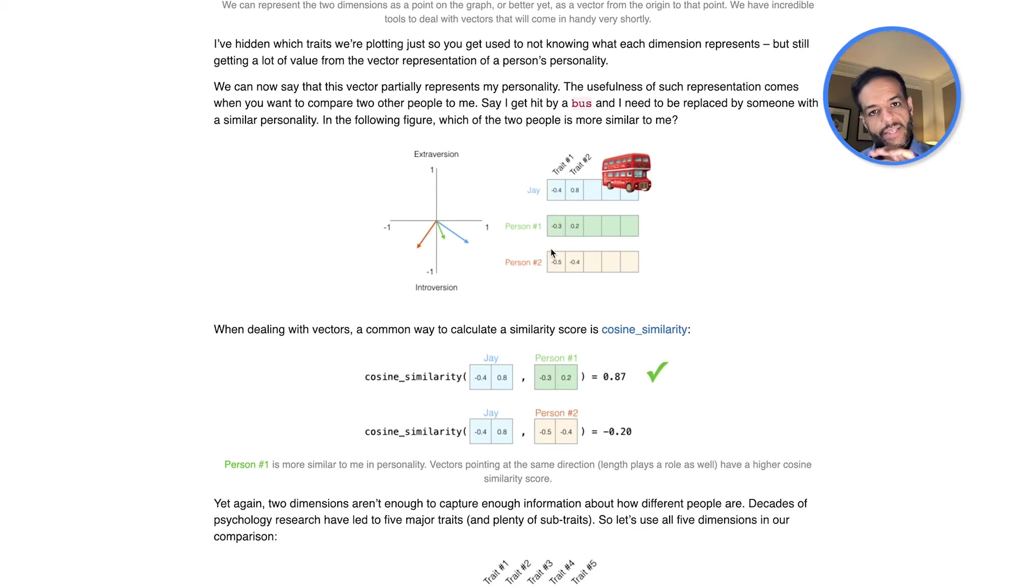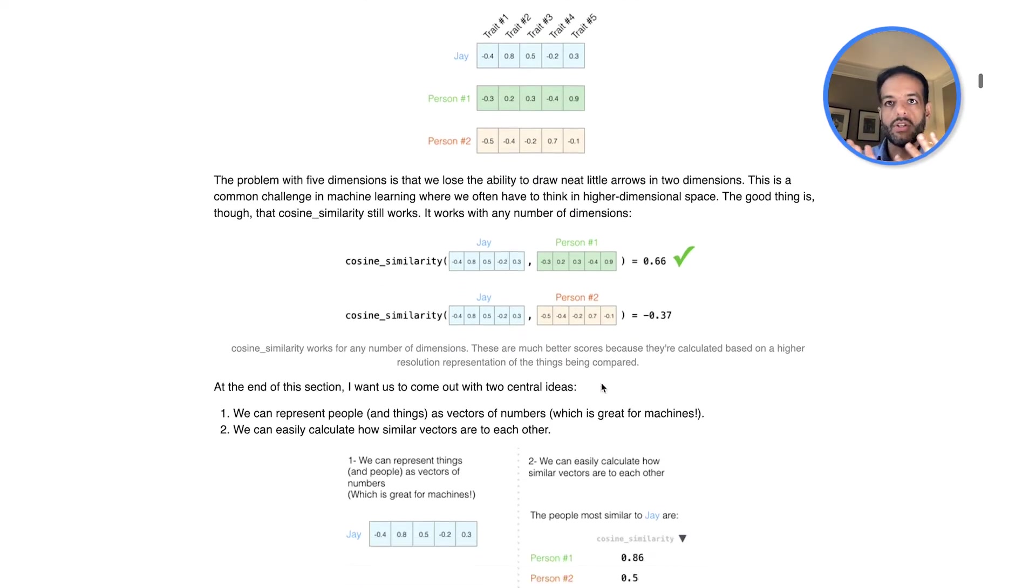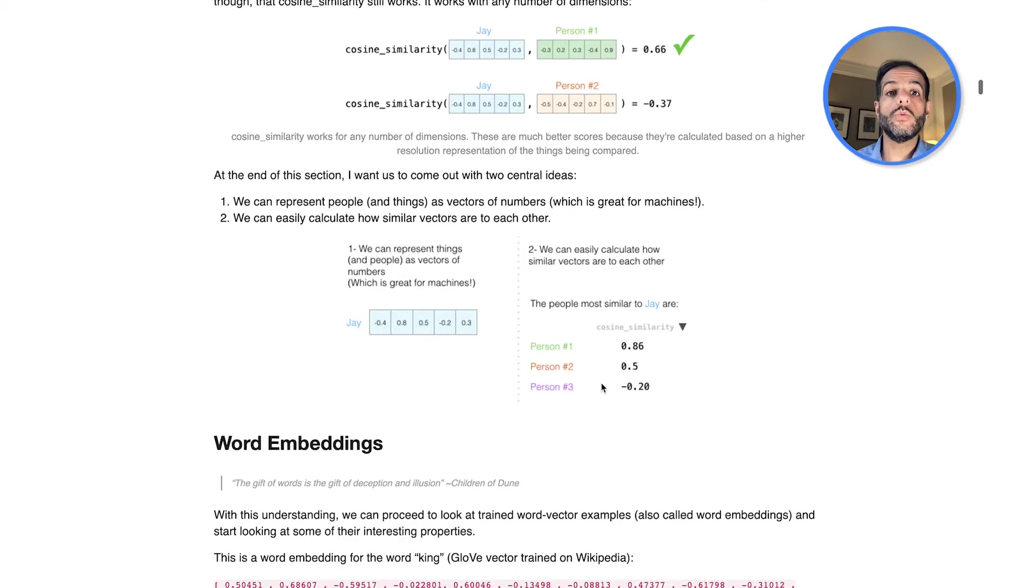And one of the main ideas of embeddings is that if you represent them as vectors or as points, you can compare them. So if you have, let's say, this is one vector for somebody's, for my scores, you can see that we have two other vectors for person one and person two. And we can compare, numerically compare those to me. And we can calculate an actual score of how similar these two vectors are, these two personalities are.